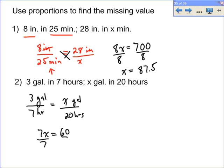Divide both sides by 7, and you get X equals 60 over 7 gallons in 20 hours. So if you go 3 gallons in 7 hours, then you get 60 over 7 gallons in 20 hours, or equivalently 8 and 4/7 gallons in 20 hours.